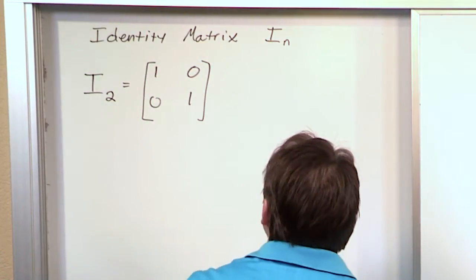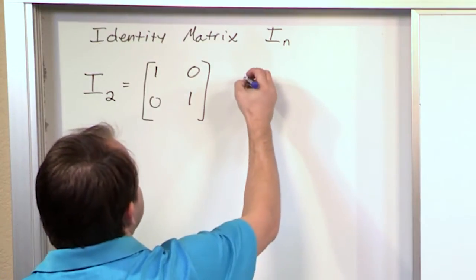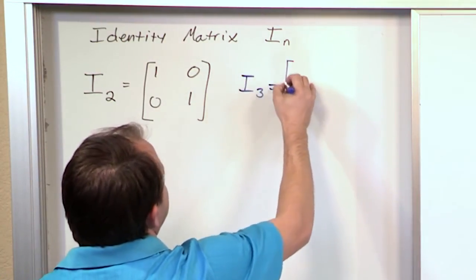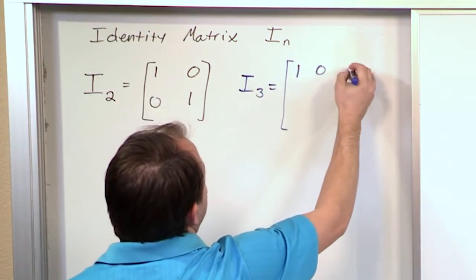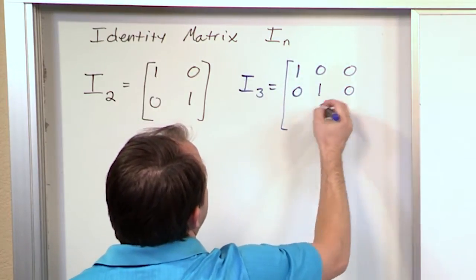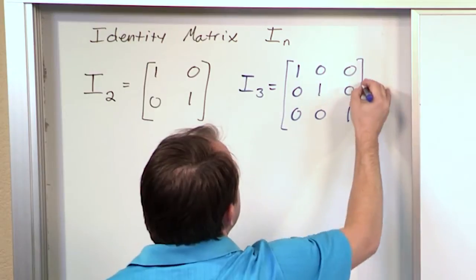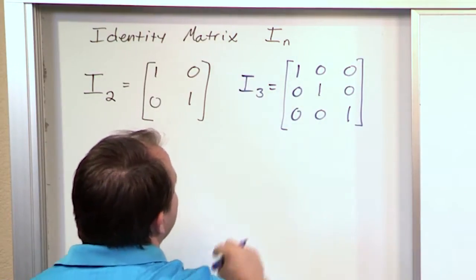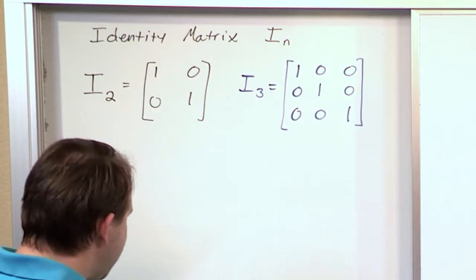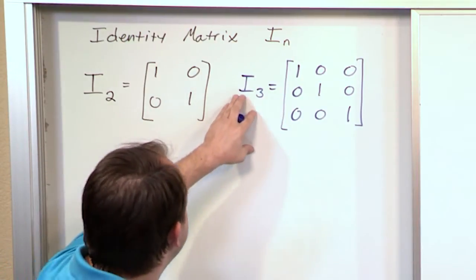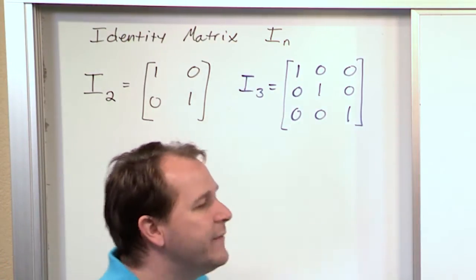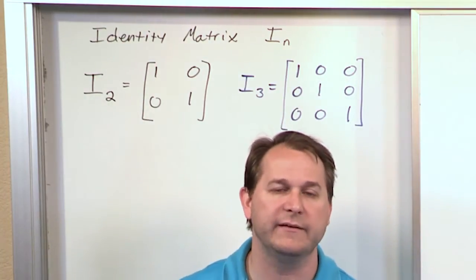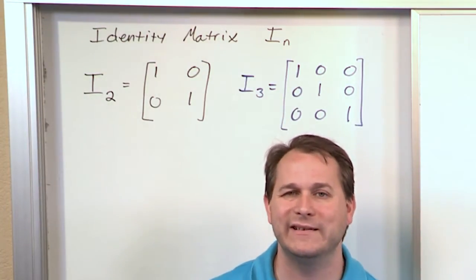We can also have, for instance, an identity matrix I sub 3. What do you think that would look like? Well, it's going to be 1, 0, 0 / 0, 1, 0 / 0, 0, 1. Notice in this case we have ones along the diagonal and zeros everywhere else on the off-diagonal elements. You can continue on and make I sub 4 and I sub 5. In each of those cases you'll have ones along the diagonal elements and zeros everywhere else. That's what an identity matrix is.